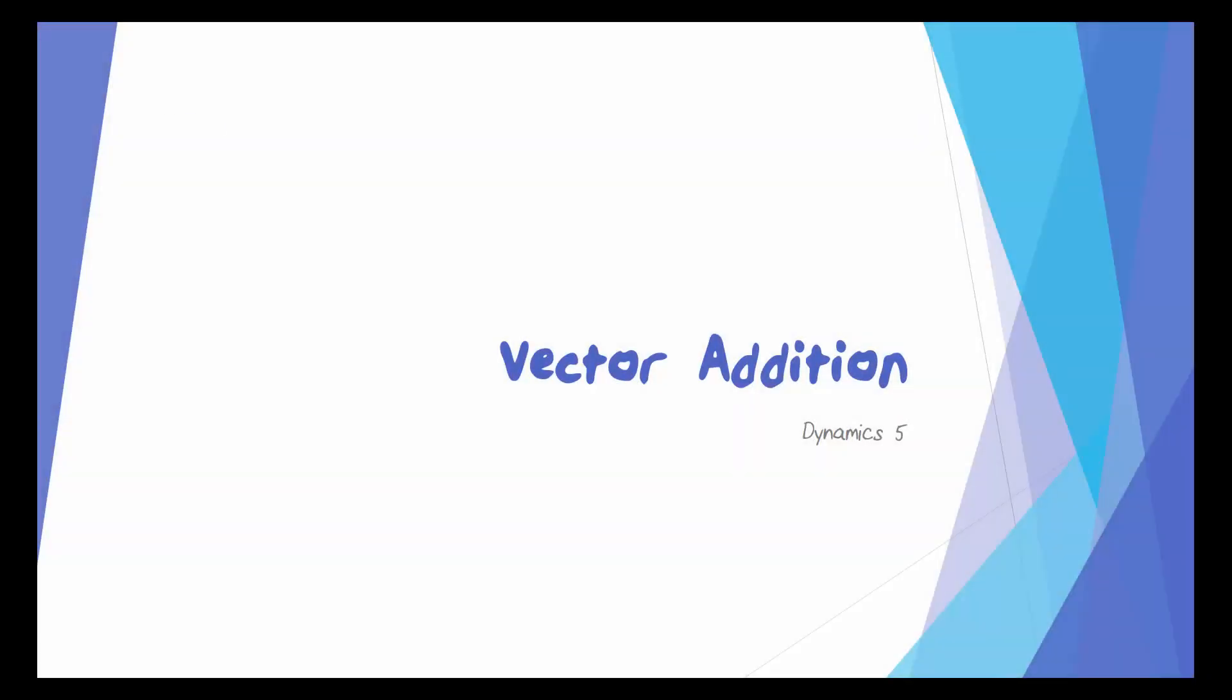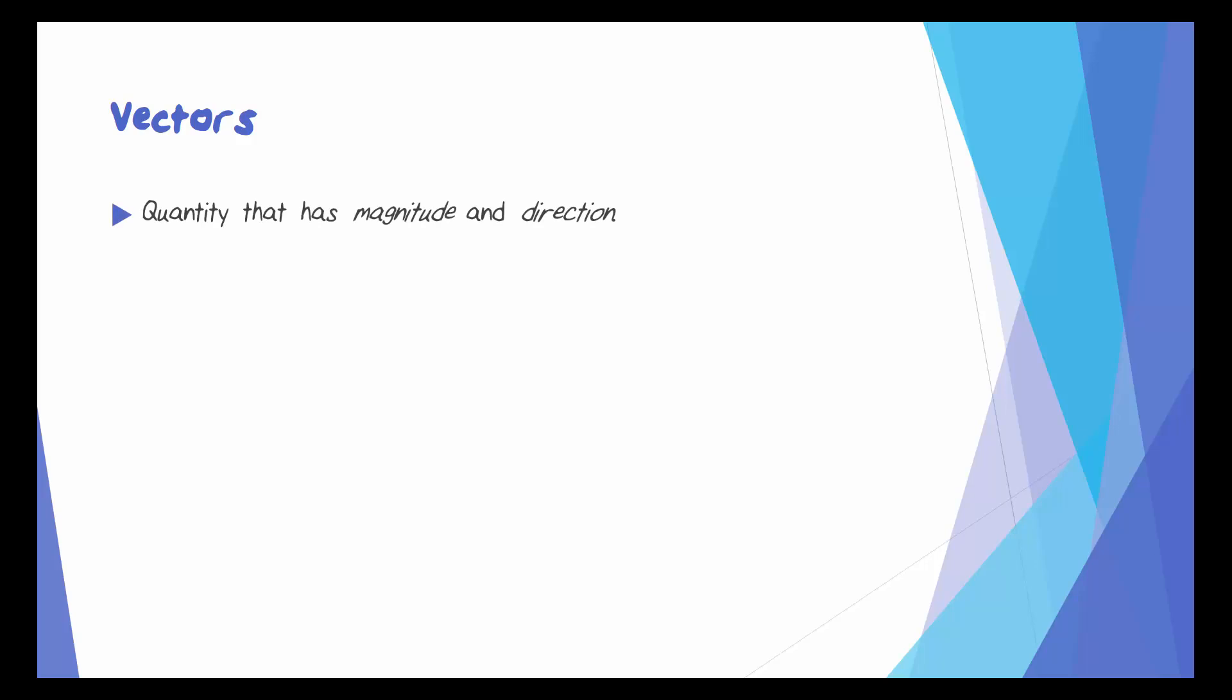This lesson is about vector addition. Remember that a vector is a quantity that has magnitude and direction, and we've already seen that we represent these with arrows.